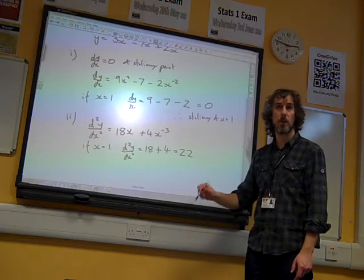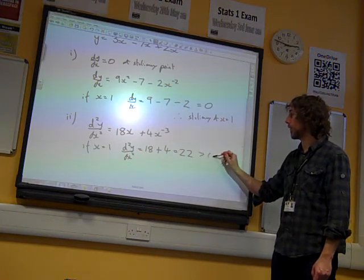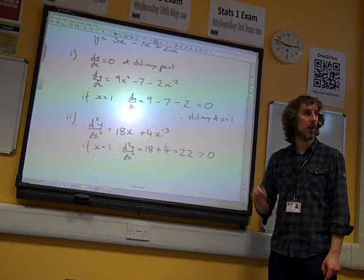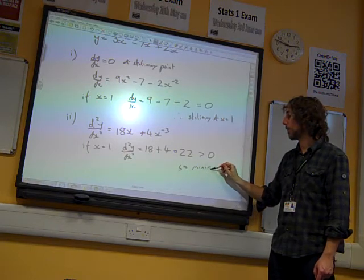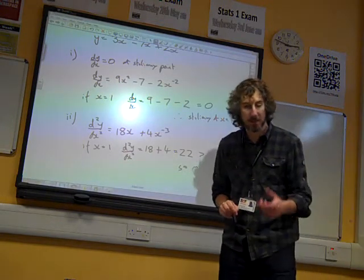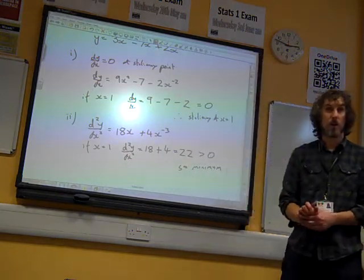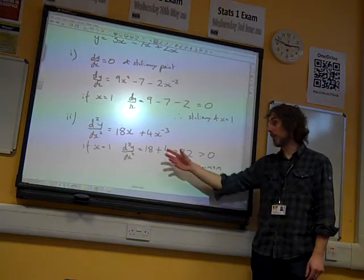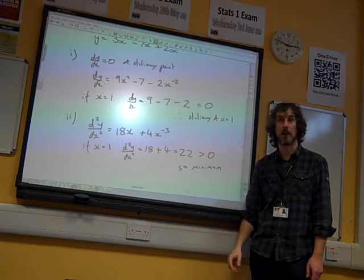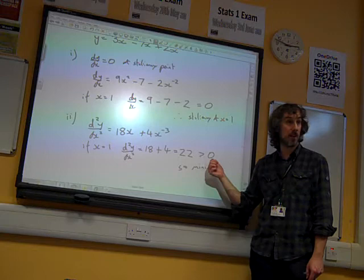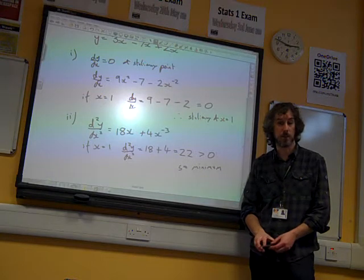And now the most important thing that we're going to write in answering this question, which is bigger than 0. And it's only because that was bigger than 0 that we can say that it's a minimum. OK, but that's really important. We could get away without writing that it's 22. The important thing is that we've shown that the second derivative is bigger than 0. OK, we have to actually state that clearly. If you didn't write bigger than 0, then you wouldn't get the mark for it. You have to state that it is bigger than 0.